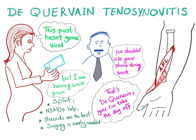The symptoms are pain in the radial side of the wrist, burning sensation in the hand, swelling over the thumb and the wrist, and difficulty gripping. The muscles affected are the abductor pollicis longus and the extensor pollicis brevis, which are inserted here in the thumb.